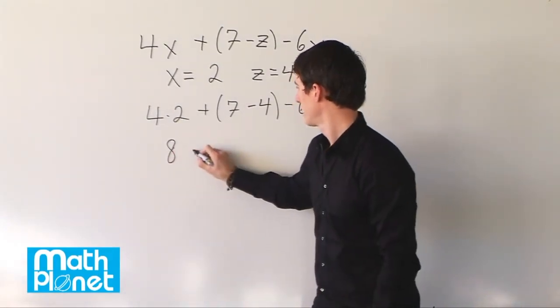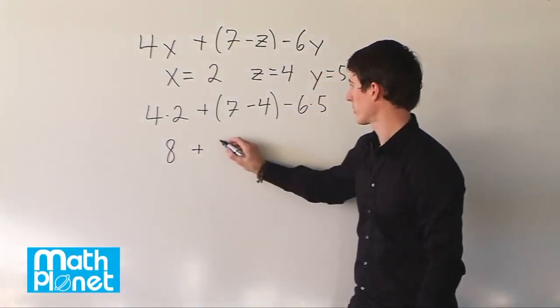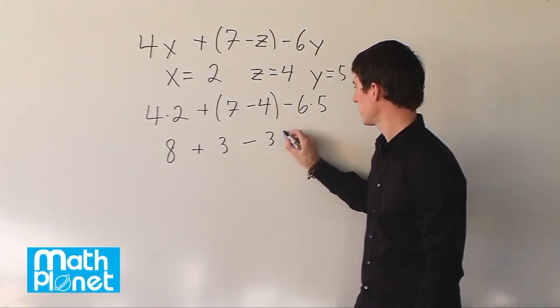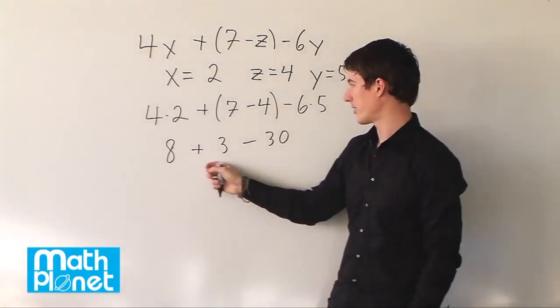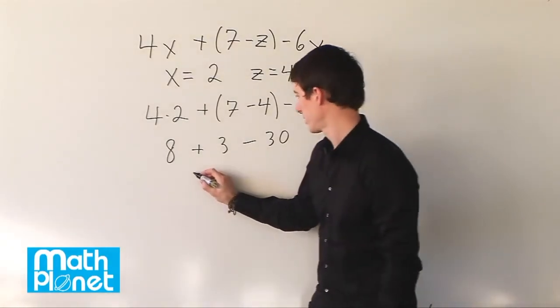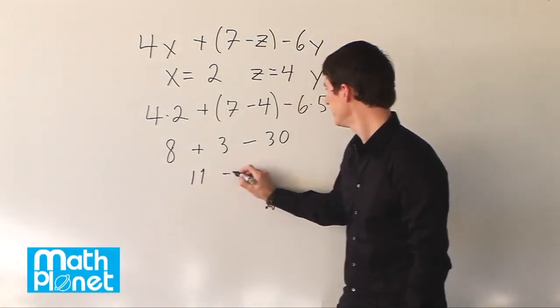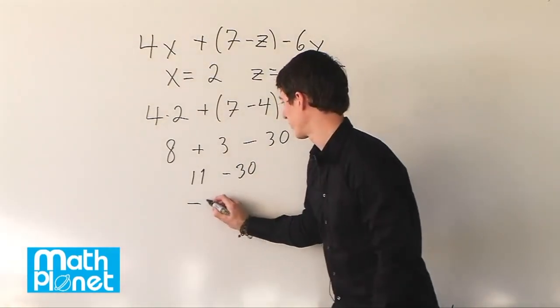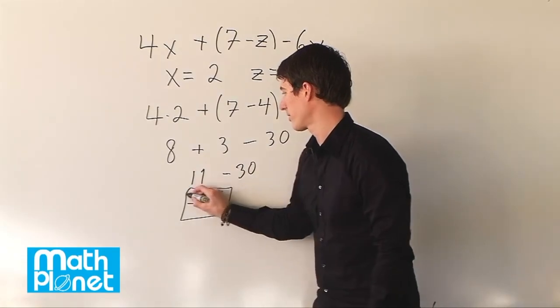4 times 2 is 8, plus 7 minus 4 is 3, minus 6 times 5 is 30, and now we can add these. So we have 8 plus 3 is 11, minus 30, and 11 minus 30 is negative 19. And that's our final answer.